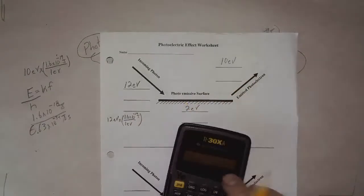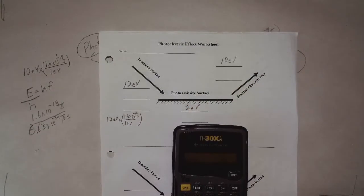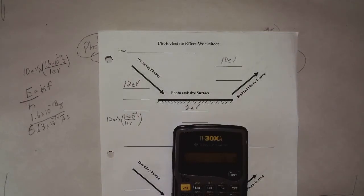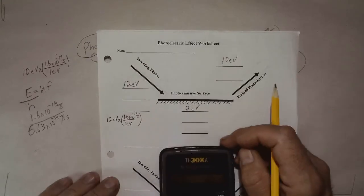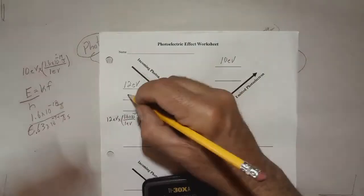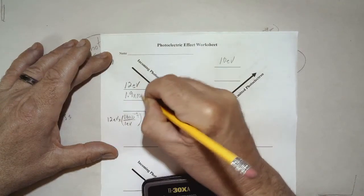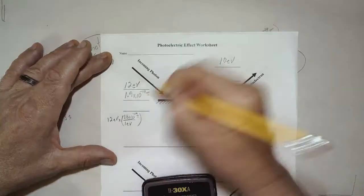So 12 times 1.6 EE19 minus, 1.9 times 10 to the minus 18th, 1.9 times 10 to the minus 18th joules.